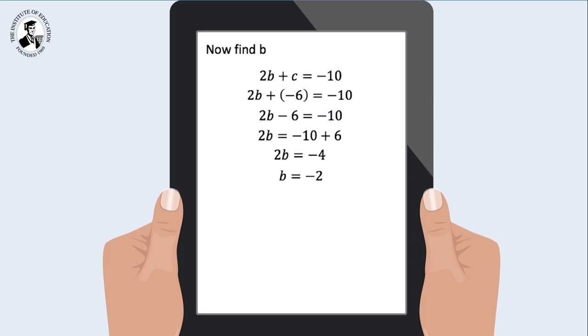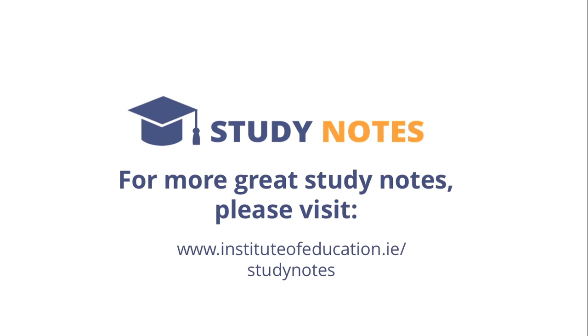Don't forget to sub your values b and c into the original equation. So y is equal to 4x squared minus 2x minus 6. And always helpful to convert it back to the way the examiner has given you the question. So f colon x arrow is equal to 4x squared minus 2x minus 6.